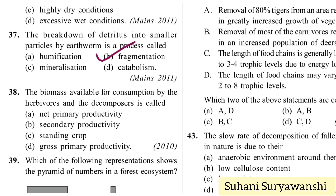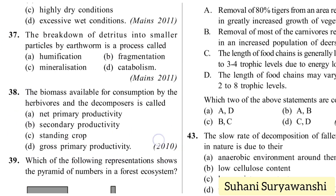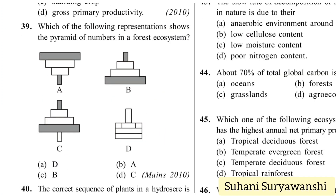The biomass available for consumption by herbivores and decomposers is called net primary productivity. Secondary productivity is produced by consumers, so not applicable here. We subtract respiratory loss from gross primary productivity to get net primary productivity, which is available to herbivores. So the answer is option A — net primary productivity.